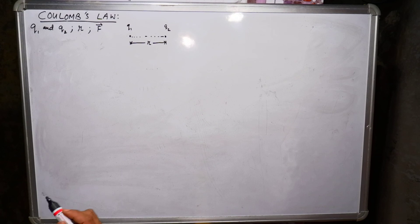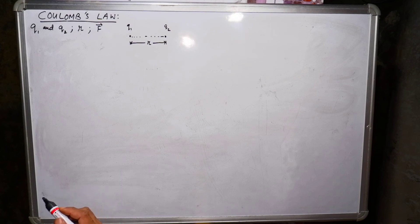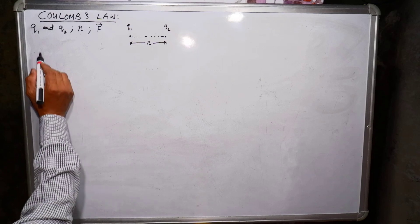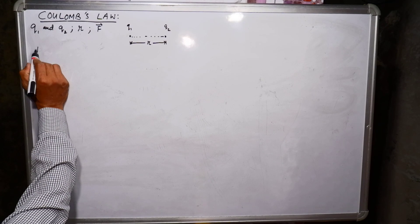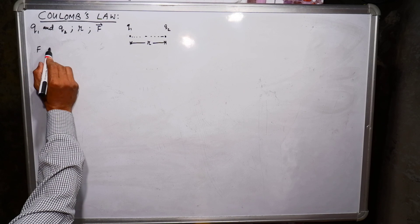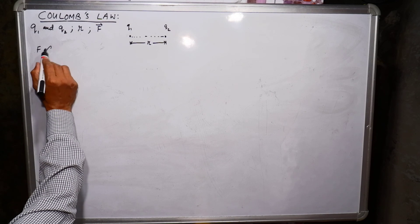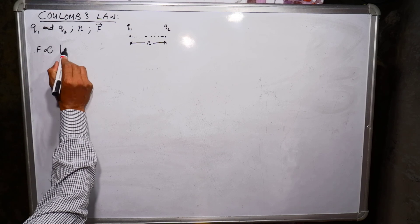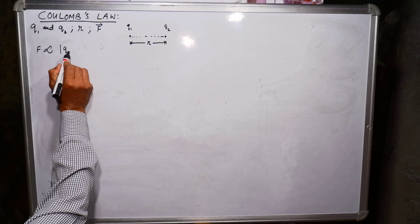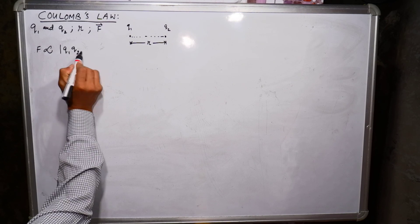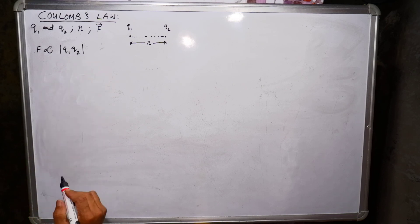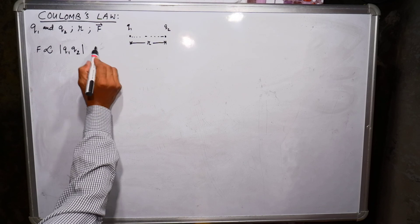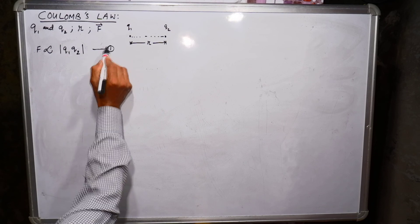According to the first part of the statement, the electrostatic force between two point charges is directly proportional to the product of the magnitude of the charges. That means F is directly proportional to the product of q1 and q2 (magnitude only). Name this as equation number one.